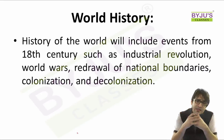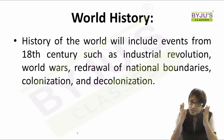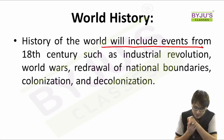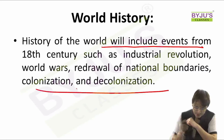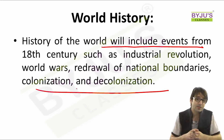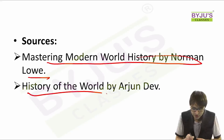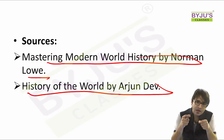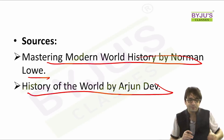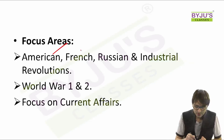Another area of your history syllabus talks about world history. The syllabus covers events from the 18th century such as the Industrial Revolution, World Wars, redrawal of national boundaries, colonization and decolonization. What are the sources available? You can read Mastering Modern World History by Norman Lowe, or History of the World by Arjun Dev. Where should your focus be? The focus has to be on four important revolutions: American Revolution, French Revolution, Russian Revolution, and Industrial Revolution.